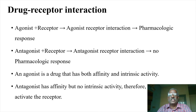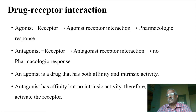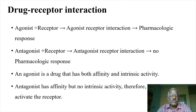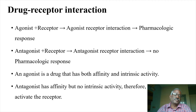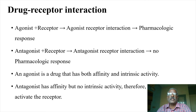An agonist is a drug which has both affinity and intrinsic activity. An antagonist has affinity but no intrinsic activity. An agonist can be considered active and an antagonist can be used to block it. For example, agonist is morphine and antagonist is nalorphine.